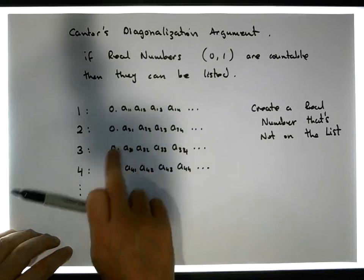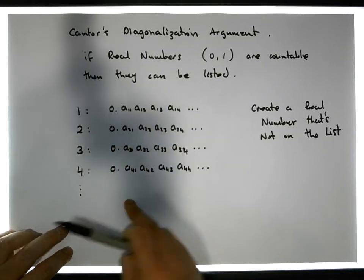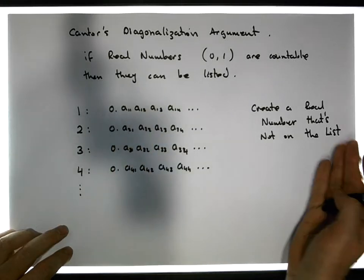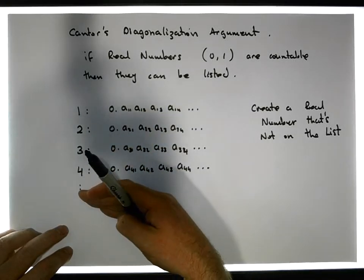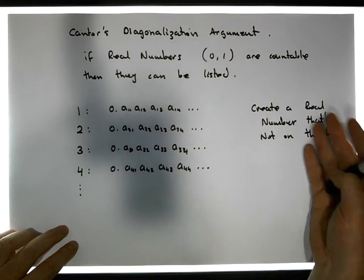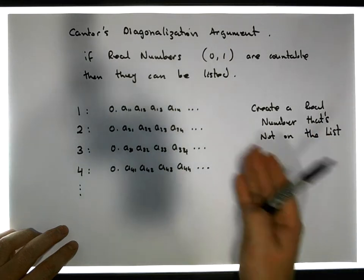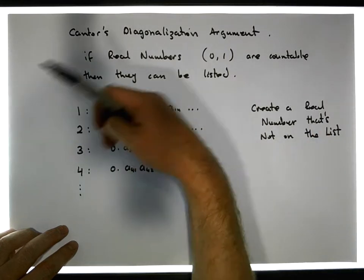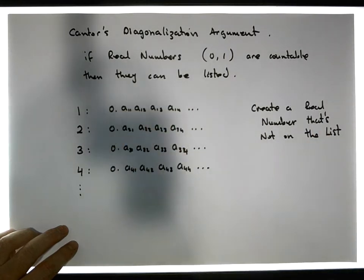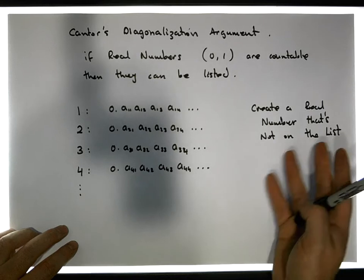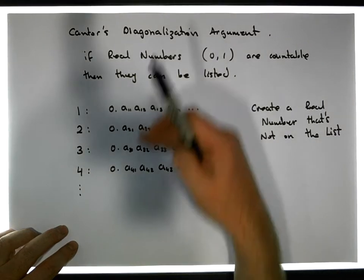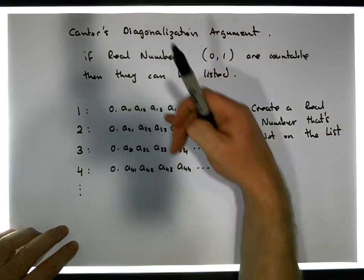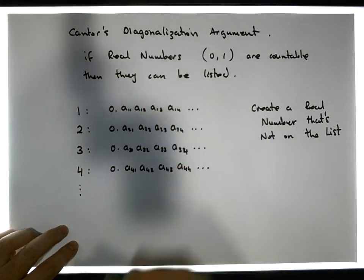Each natural number has been associated with a real number. But we've created another number that's not on the list. So we've shown that there are actually more real numbers than there are natural numbers, and in particular, we've created a new number that isn't part of this particular bijection.